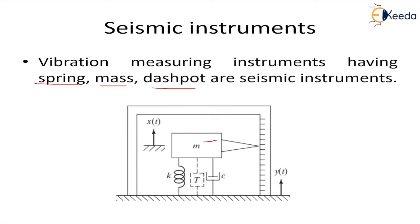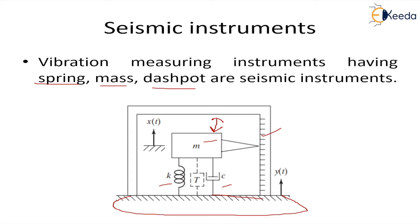If we look at this diagram, we have a mass placed inside a cage. This mass is connected to a spring and a damper. This whole caged system is connected to the surface of the vibrating unit, and because of the vibration of the base, the vibration is transferred to the mass, so the mass vibrates.